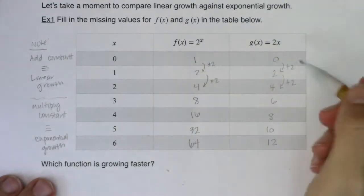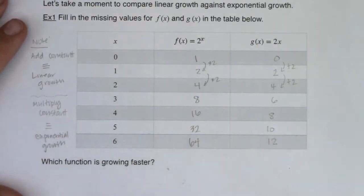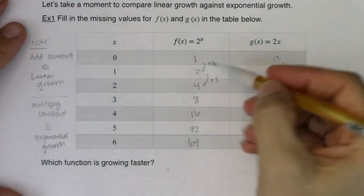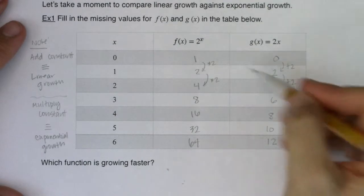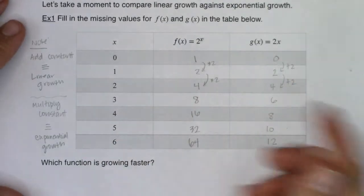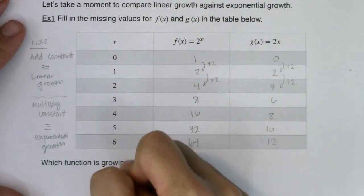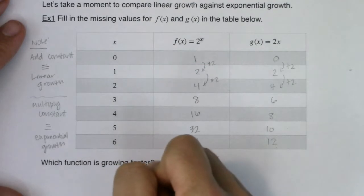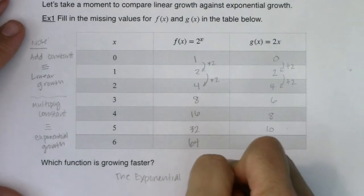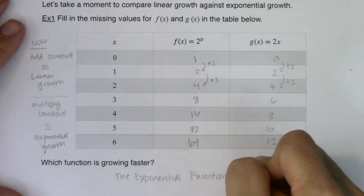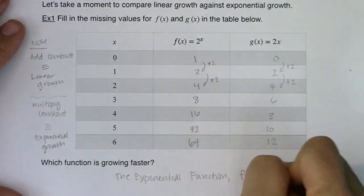All right, and in terms of which function is growing faster, I think you can see that the exponential function is growing a lot faster, right? We went, we started at 1 here, I went to 64, here it was 0 to 12. So this got a lot larger, a lot faster. So the exponential function is growing faster. All right, and in this case, that function was 2 to the x.